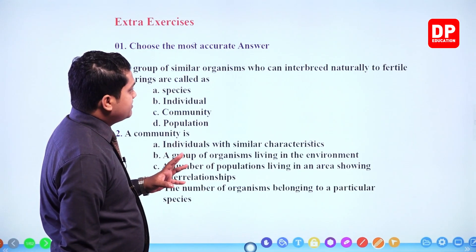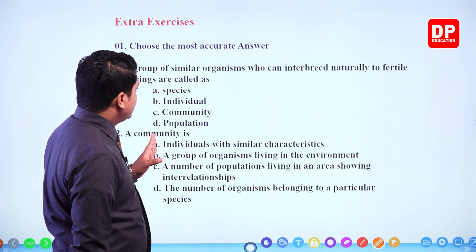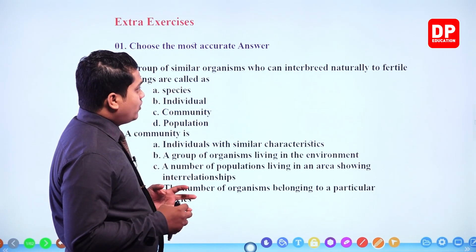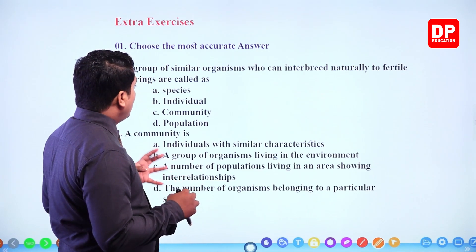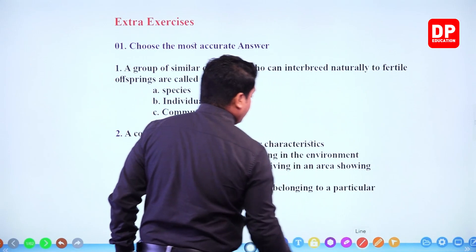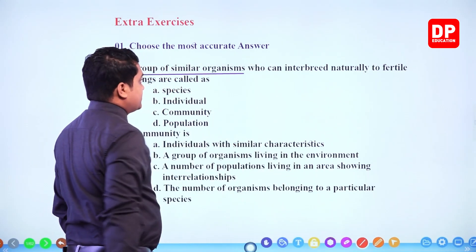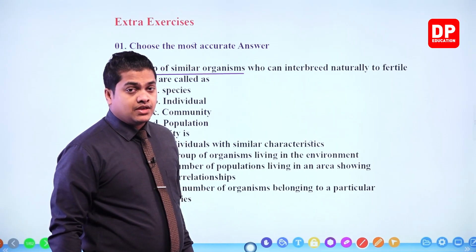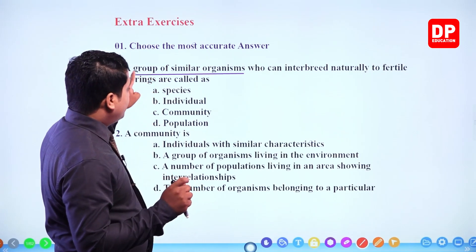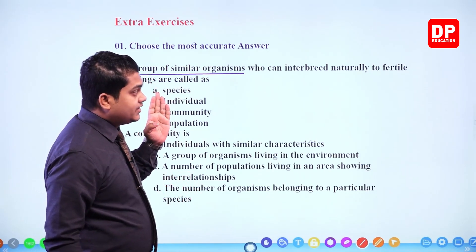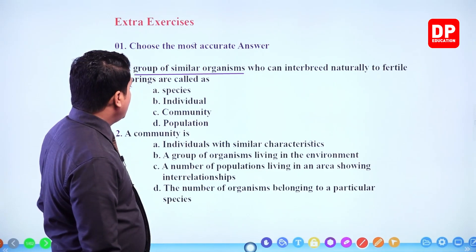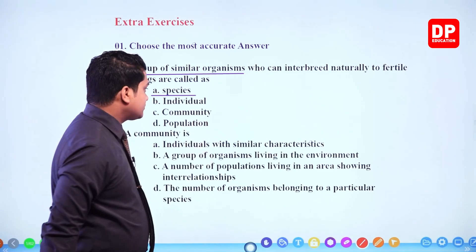They're asking what kind of organisms can interbreed naturally to produce fertile offspring. It is given as a 'group of similar organisms' — that means some number of organisms that belong to the same species. So a group of similar organisms who can interbreed naturally to produce fertile offspring are called as species.